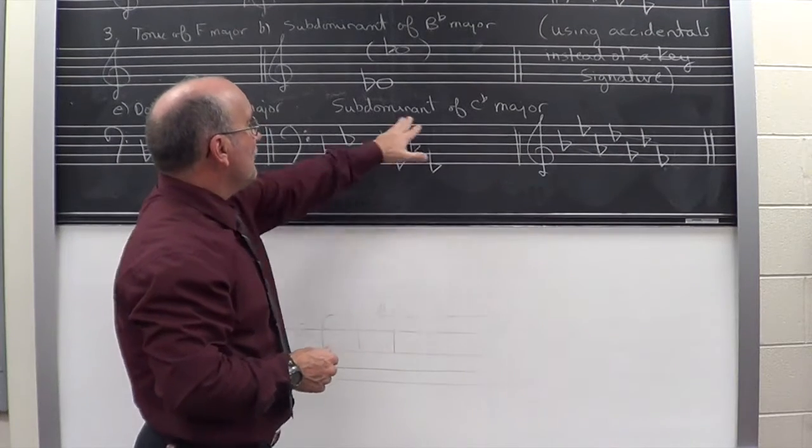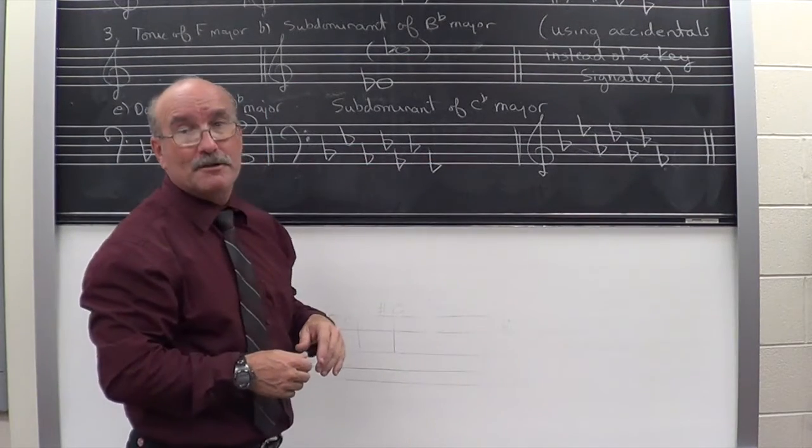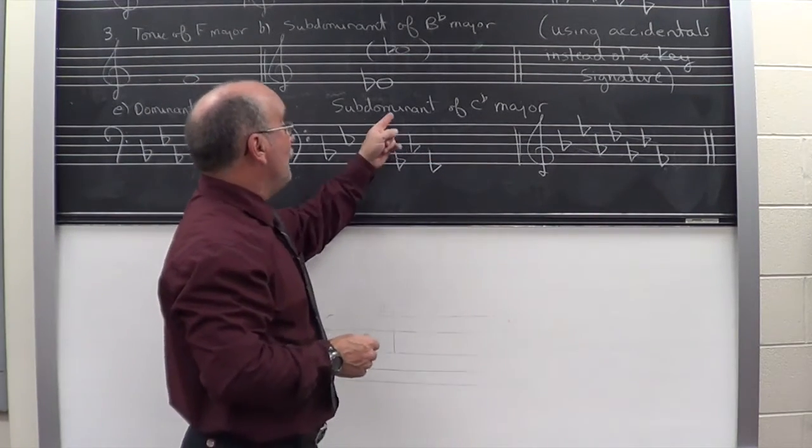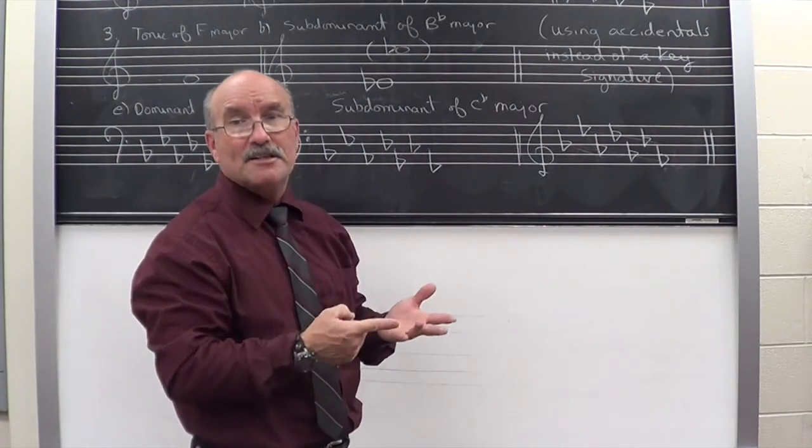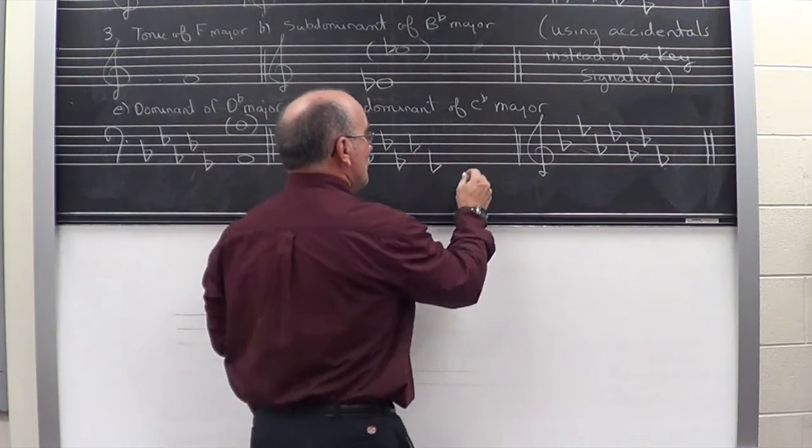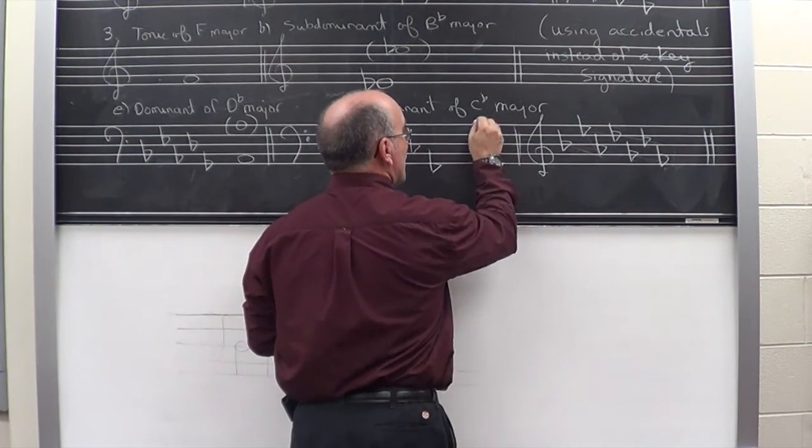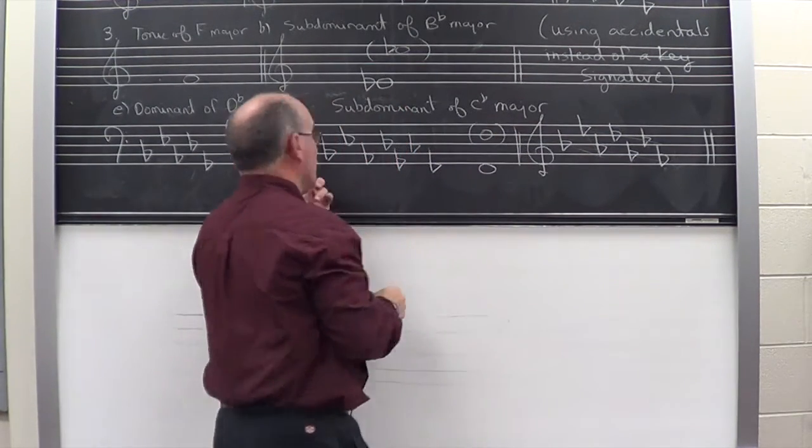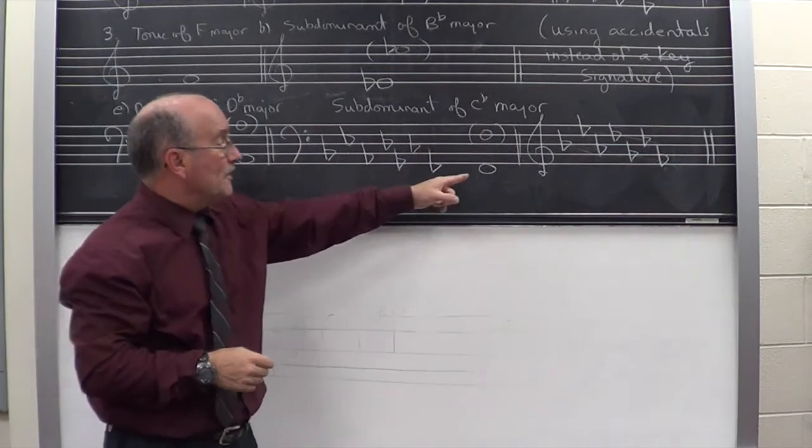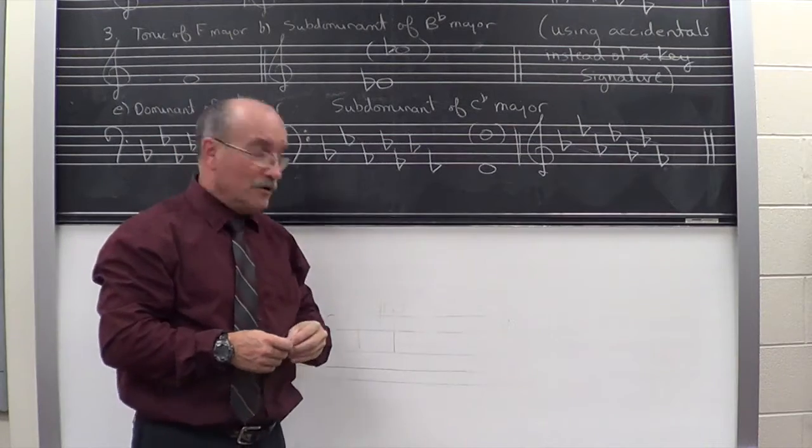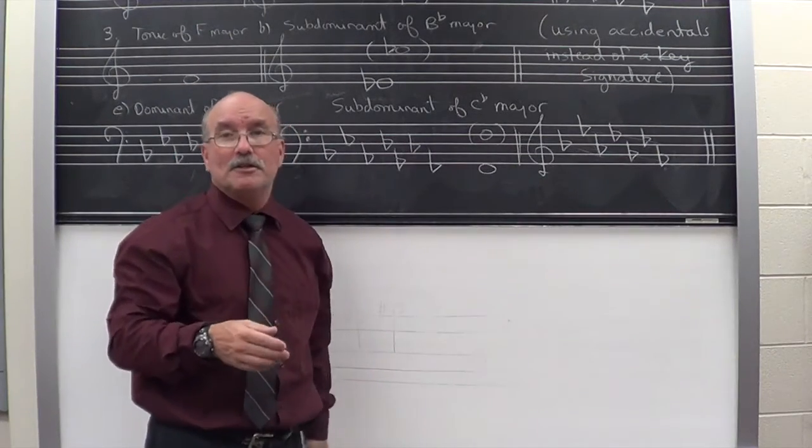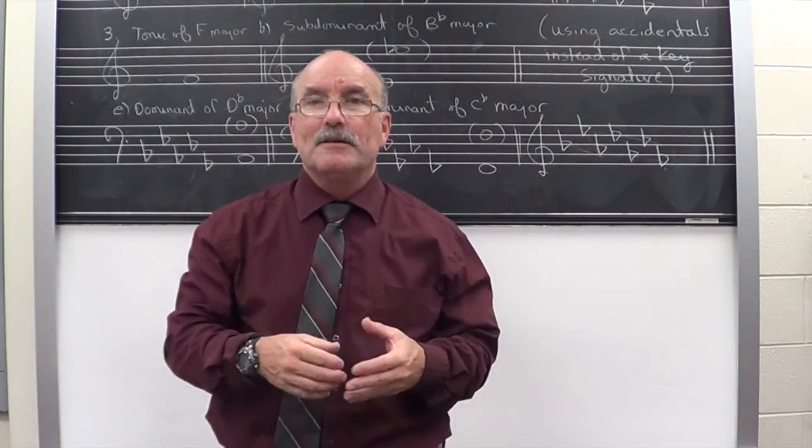And lastly, the subdominant of C flat major. So they want the fourth note of C flat major. C, D, E, F. Now, it's actually F flat, of course. But the key signature looks after that. Once again, we're in the bass clef. So I have to write the F here or here. And that's how you do all of the questions in flat complete.